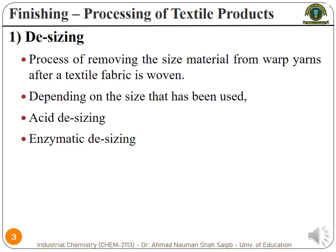The first process is the desizing process, in which the removal of the size material is carried out from the yarns after the textile fabric is woven. It depends on what size has been used.